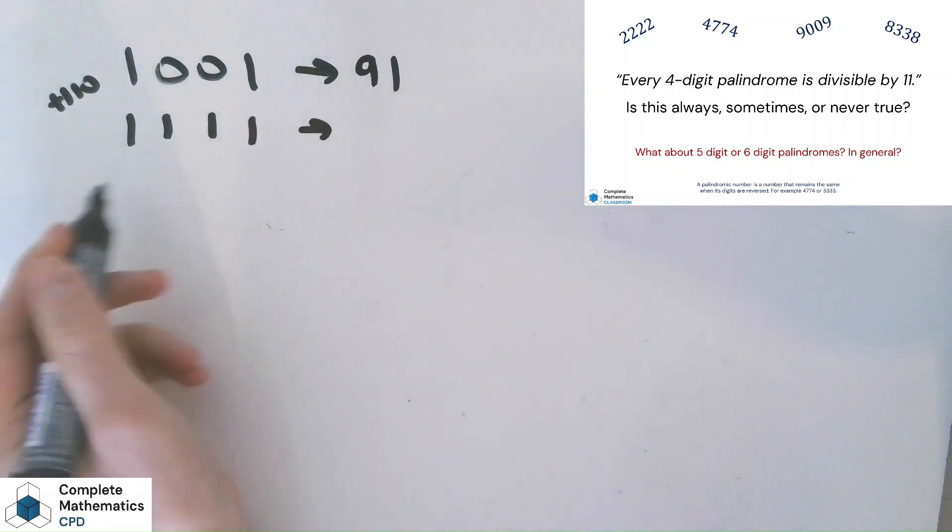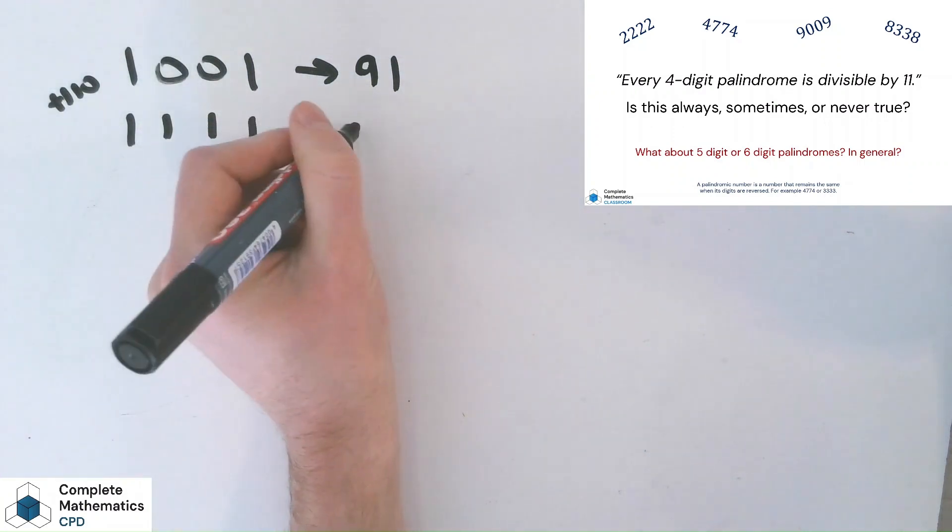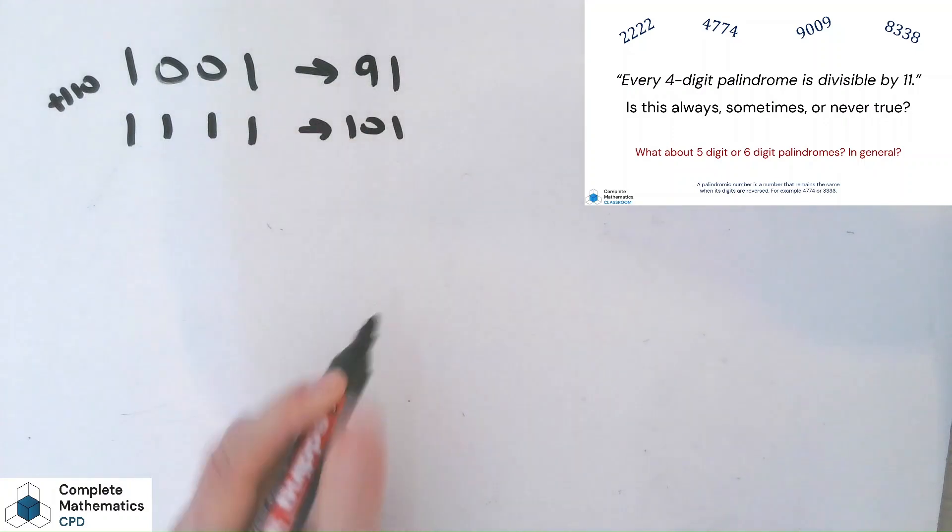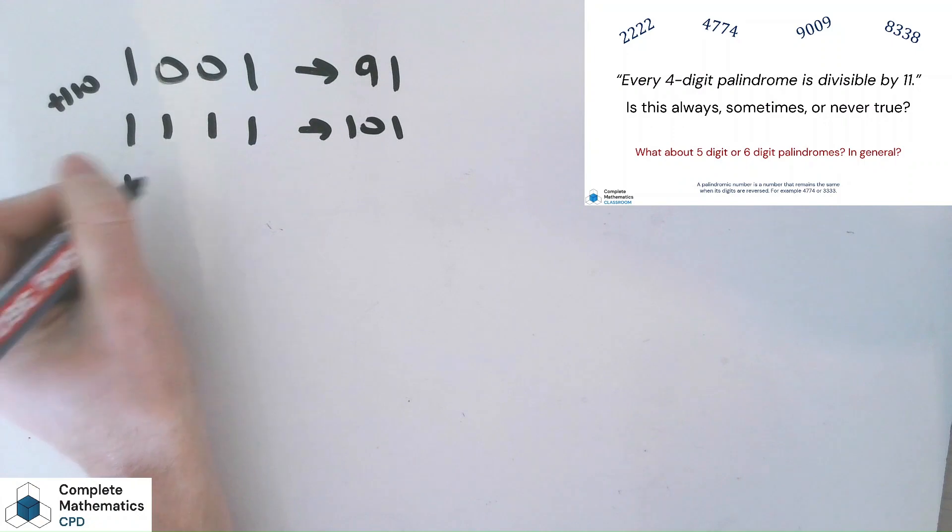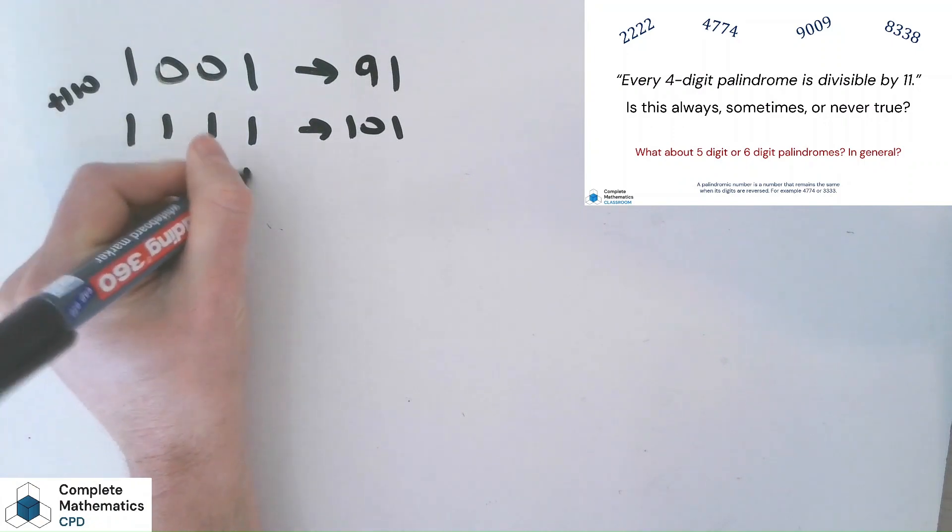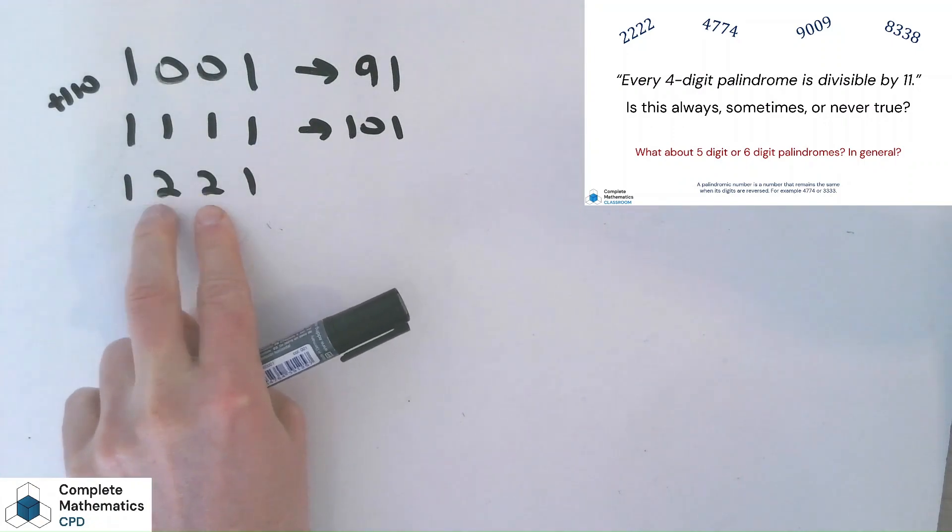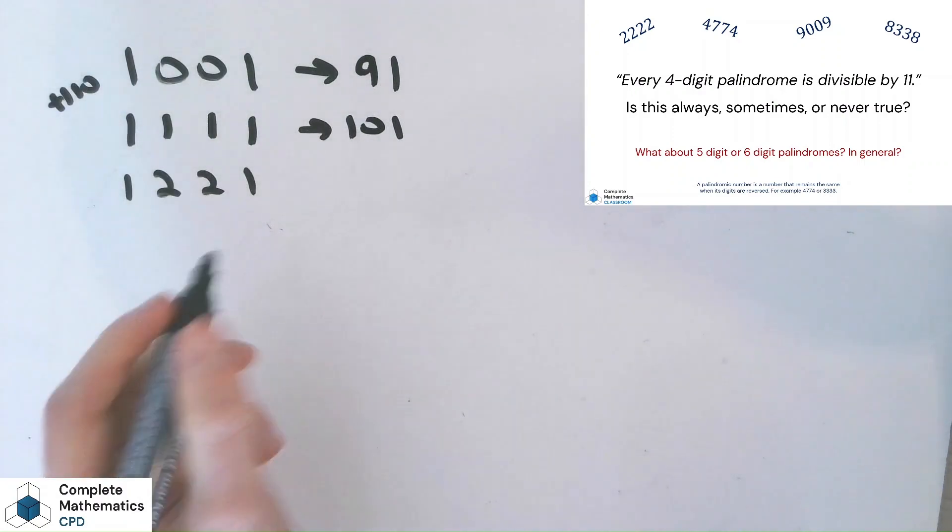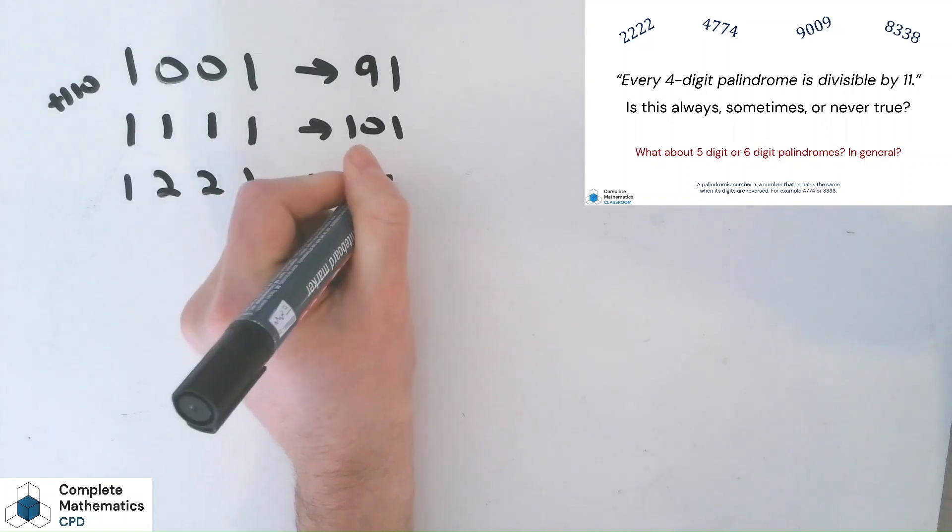So without calculating, I know that this answer, when I divide it by 11, would be 101. An extra 10 elevens. And this rule is going to hold for the next one as well. You can see it's just these middle two digits, the tens and the hundreds, which are increasing by one each time. So we're just adding 110 each time. So that one would be 111.